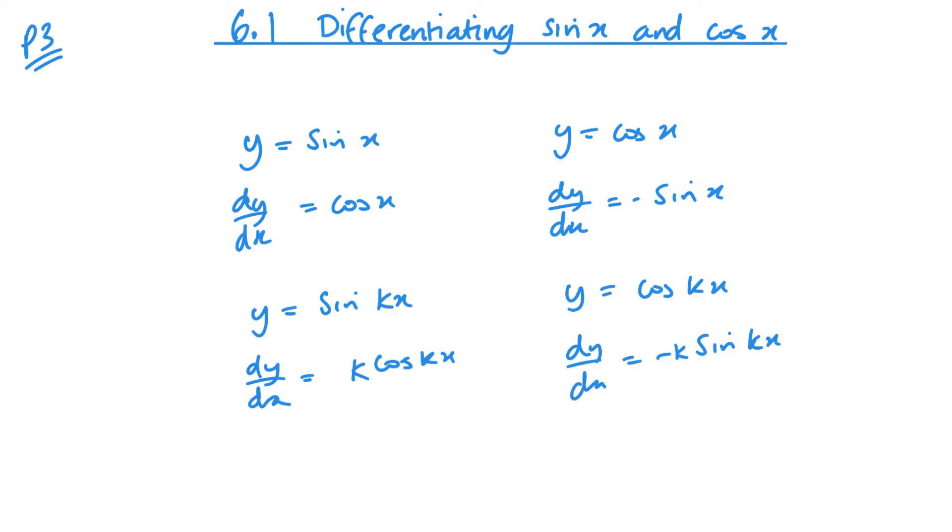Now, one other additional piece of information that you need to know for this is that all your angles must be in radians. So this comes from differentiating in first principles. The angles have to be in radians for us to use that process. Therefore, when we are differentiating, all our angles must be in radians because that's what this is based on. So remembering calculus, no degrees, radians only.